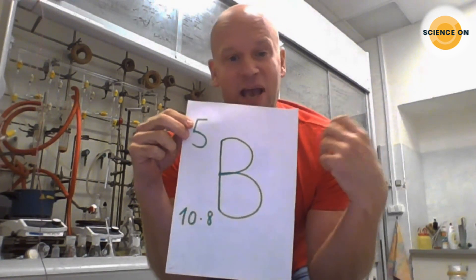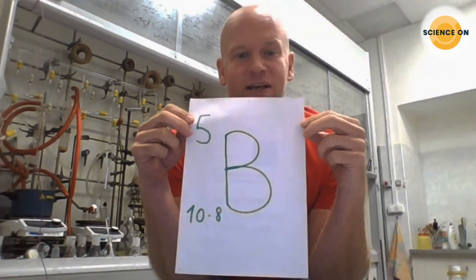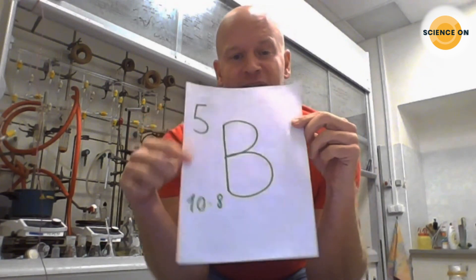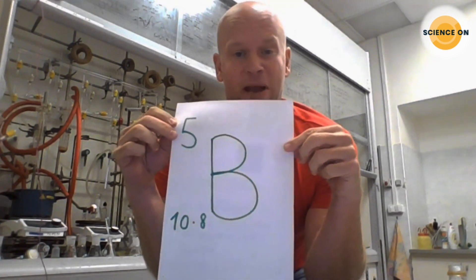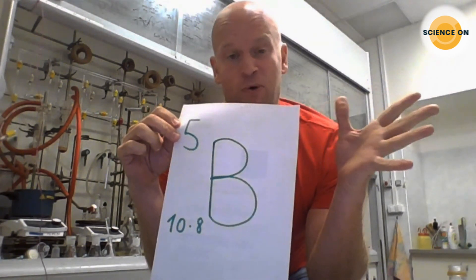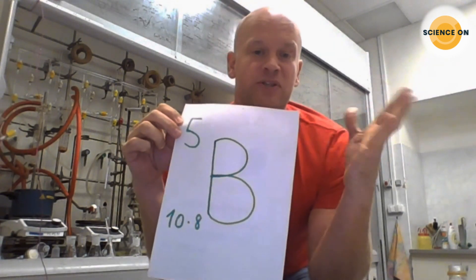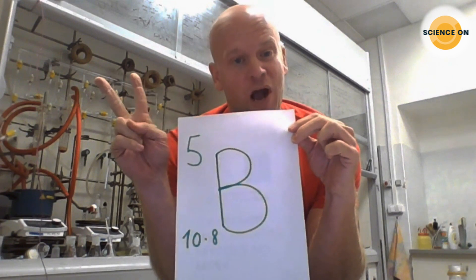The number five here is of course its atomic number - how many protons an atom of boron has. That's why it's the fifth element. The second number here is the total mass, the atomic mass of the average boron atom, and it's not a whole number, it's 10.8.